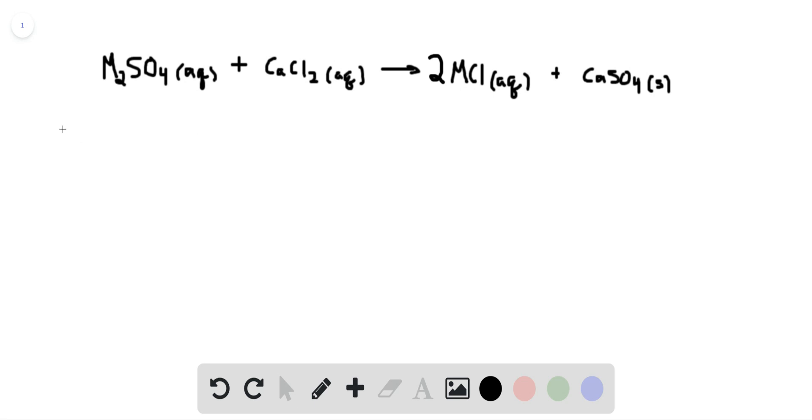It tells us that we have 1.36 grams of calcium sulfate at the end, and we know the molar mass of calcium sulfate so we can simply figure out how many moles of calcium sulfate there are. We know that the molar mass is 136.14 grams per 1 mole of calcium sulfate.